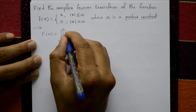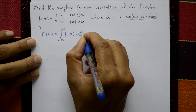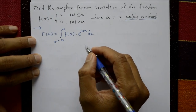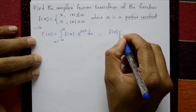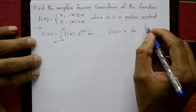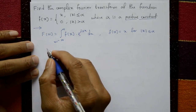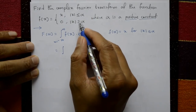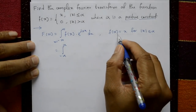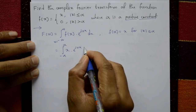The Fourier transform is f̂(u) equals the integration from minus infinity to plus infinity of f(x) times e^(i·u·x) with respect to x. Since f(x) = x for |x| ≤ α, this reduces to the integration from minus α to plus α of x times e^(i·u·x) with respect to x.